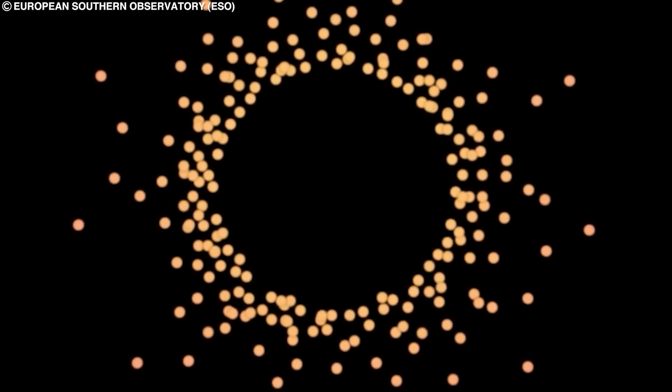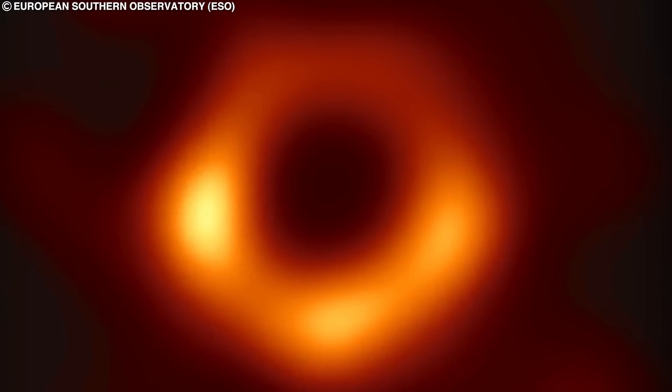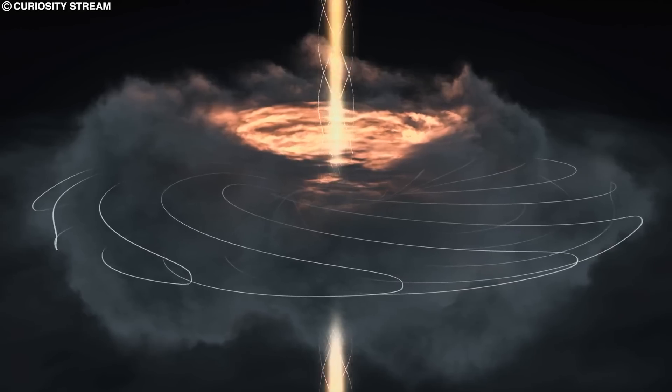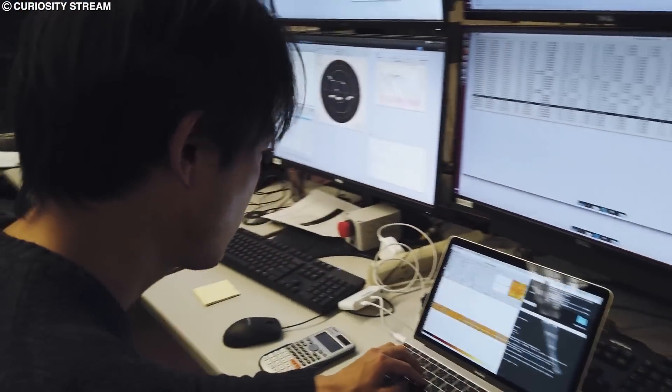This image of Sagittarius A was the very first visual confirmation that the supermassive black hole indeed existed at the center of our galaxy, especially at a time when researchers were beginning to doubt its existence.